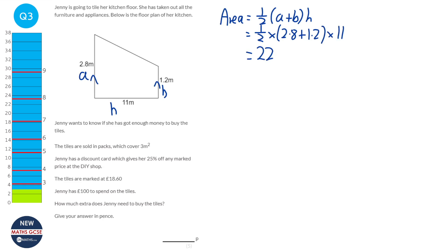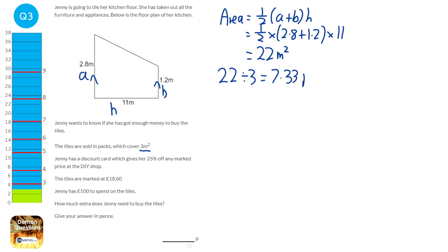So the area of the floor is 22 metres squared. It says the tiles are sold in packs which cover 3 metres squared, so we're going to do 22 divided by 3, which will be 7.33 packs. Obviously you can't get 0.33 of a pack, so we're going to have to get 8 packs and just have some left over. So we'll need 8 packs in total.